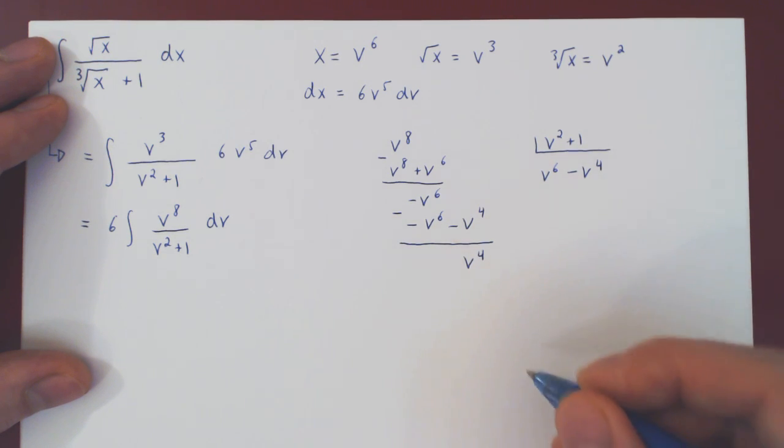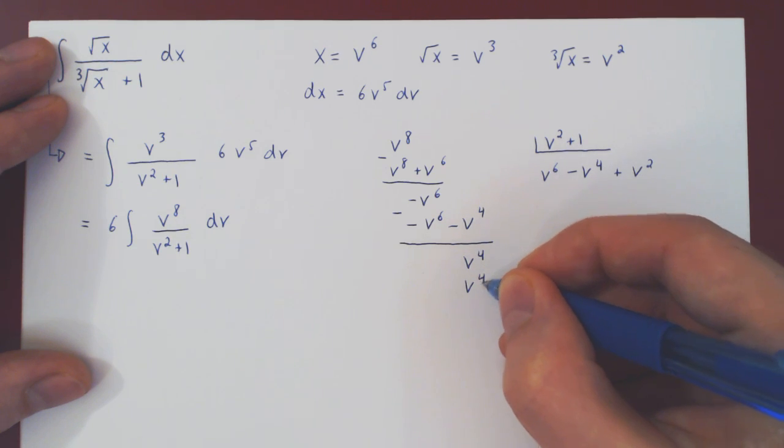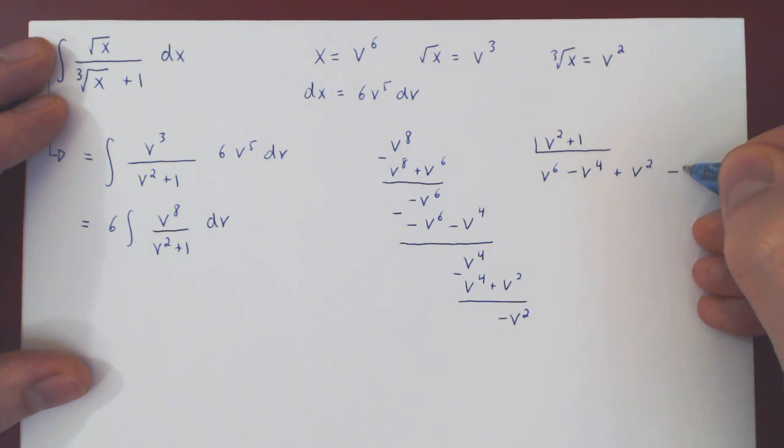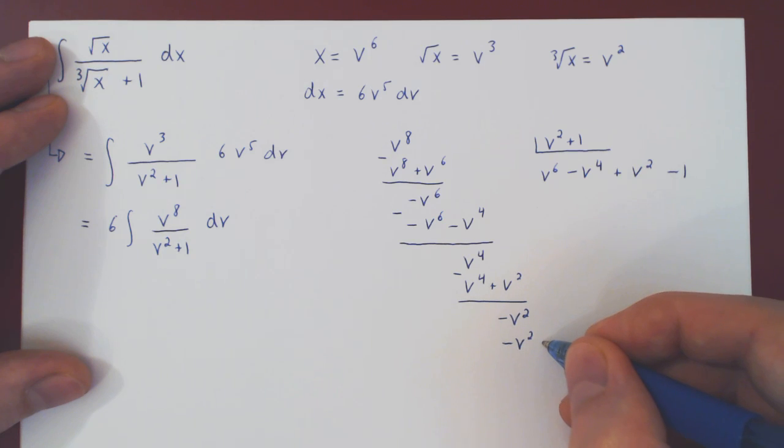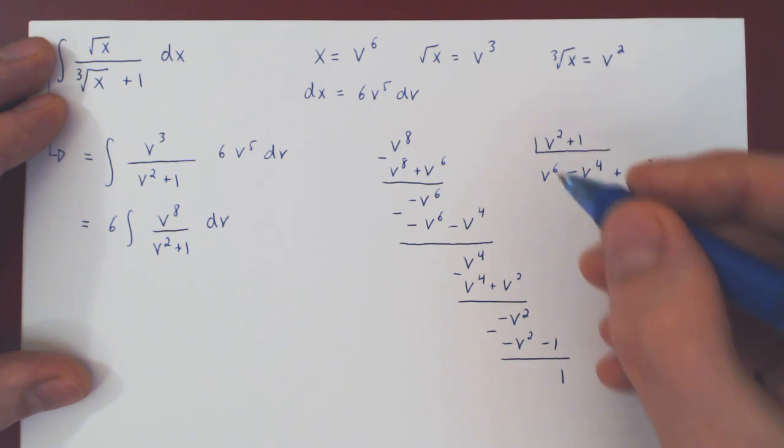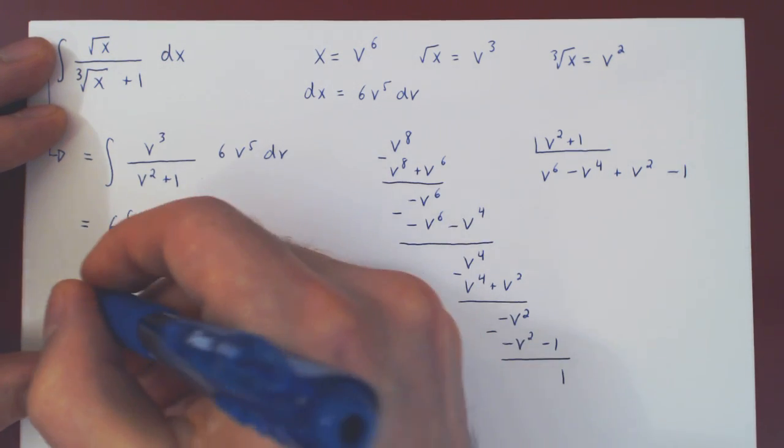And again here we negate negative 1 so we get positive 1, and now this completes our long division. We have a constant remainder so it has degree 0 which is less than 2.